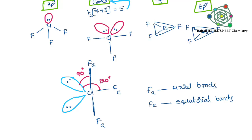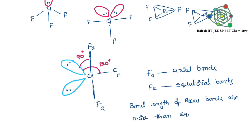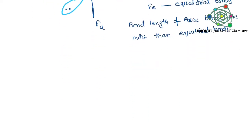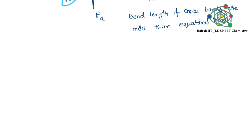The same principle applies to PCl5. PCl5 has a trigonal bipyramidal structure. The axial chlorine bond length is greater than the equatorial bond lengths because all three equatorial chlorines repel the axial chlorines, making axial bond lengths higher.